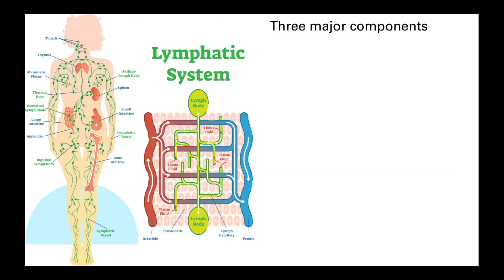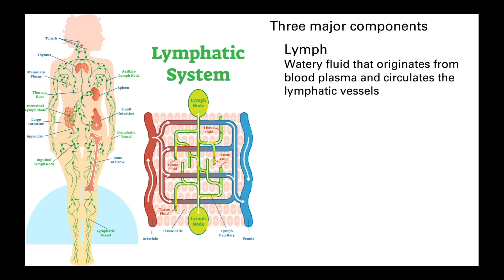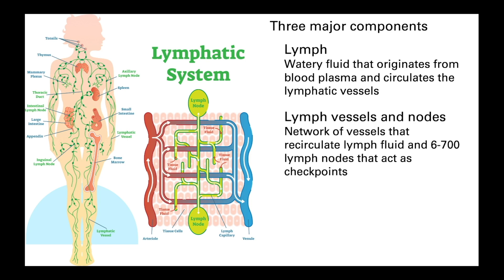The lymphatic system is made up of three main parts. Firstly, the lymph itself, which is a watery fluid forced out of the circulation in the capillary beds to allow the exchange of gases and nutrients from the blood into the tissues. Then the lymphatic vessels that allow the lymph to recirculate around the body so it can be reabsorbed into the blood. Along the way are a series of between 600 and 700 lymph nodes that act as security checkpoints, inspecting and cleansing the lymph.